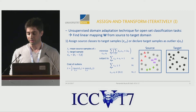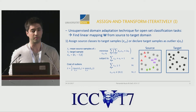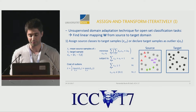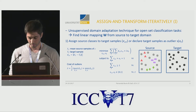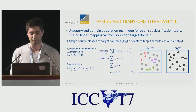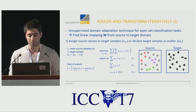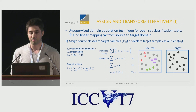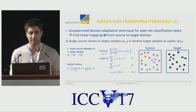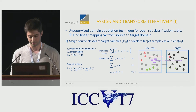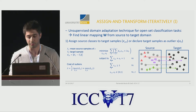In order to deal with this domain shift in this new OpenSet problem, we propose a new method that we call Assign and Transform Iteratively. I'm going to introduce this method in its unsupervised setting. This method computes a linear mapping from the source to the target domain. Its first step is the assignment of class labels to all target samples. This assignment problem can be seen as a linear programming problem, where we minimize the distances between the target samples and source clusters based on class labels. As you can see in the source domain, we also include the unknown class, represented as gray circles.